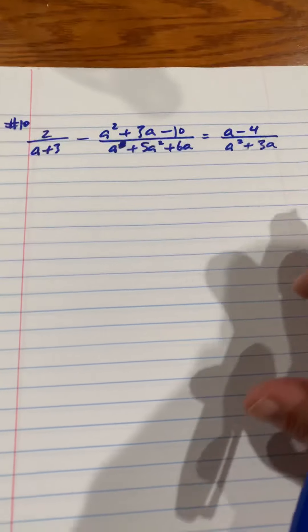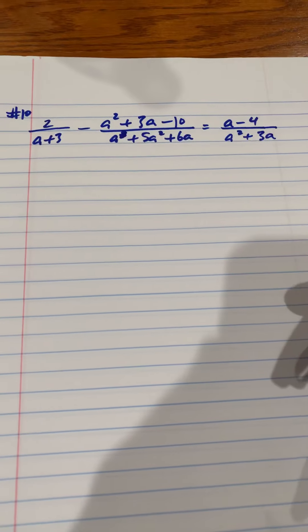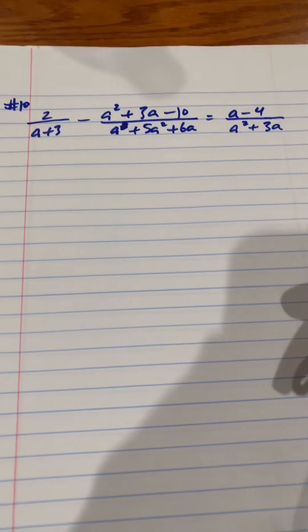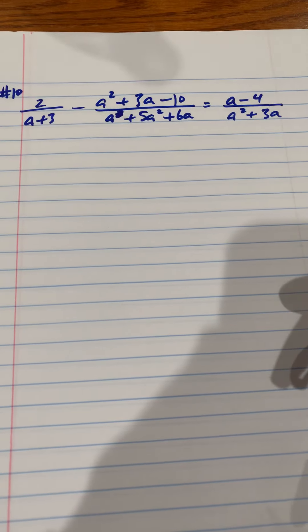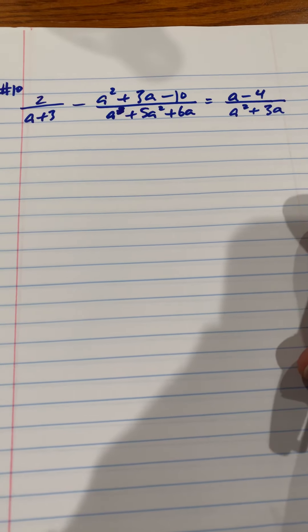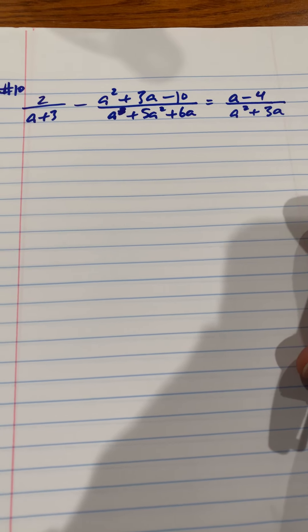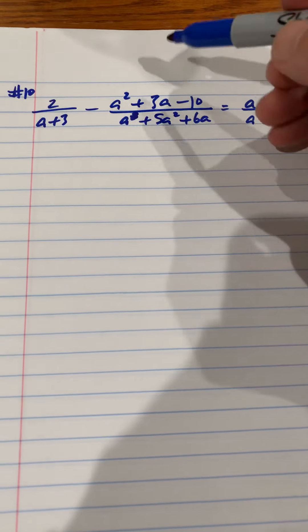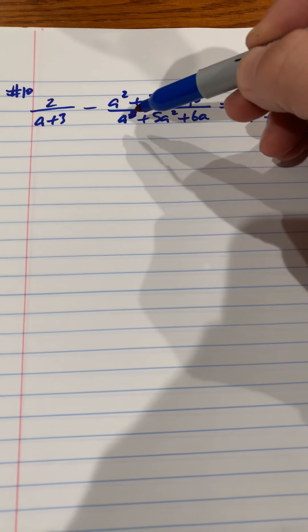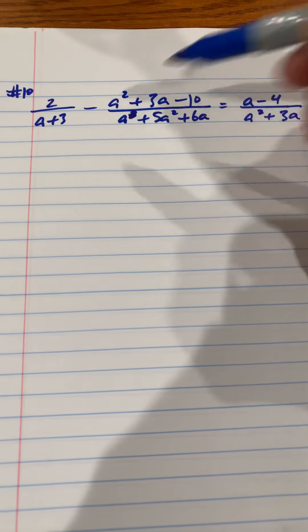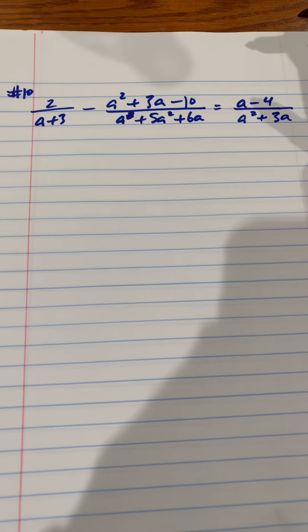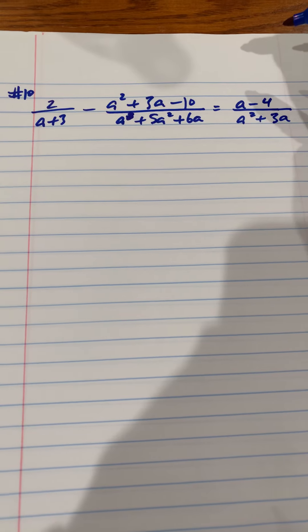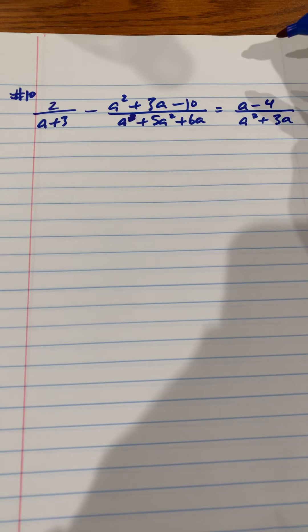Algebra 2. Let's go ahead and do one more here — let's do one that's a little more involved. Just for clarification, that is an a cubed right there. So let's just go through this again.